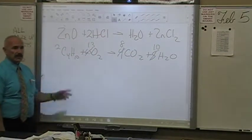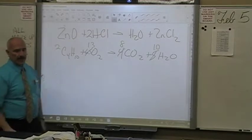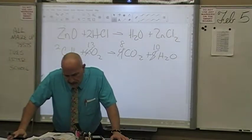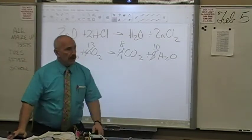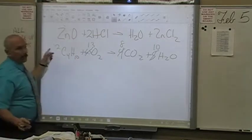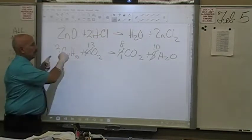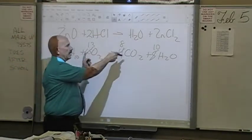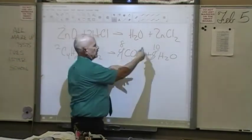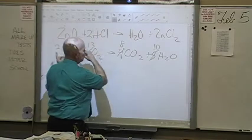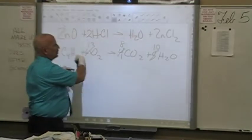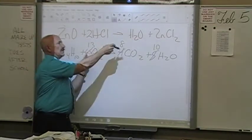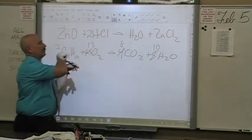Then it says give the ratios. There are some cool ratios here: two to thirteen, thirteen to ten, thirteen to eight, eight to thirteen, eight to ten, ten to eight, two to eight, eight to two, two to ten, ten to two, thirteen to ten, ten to thirteen.